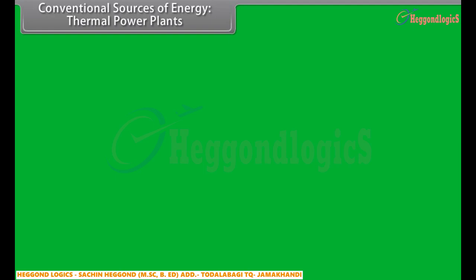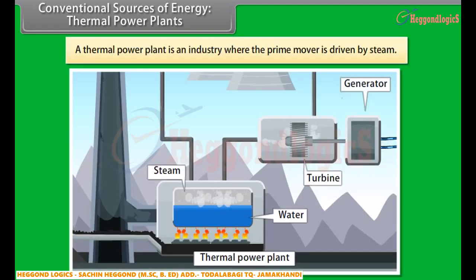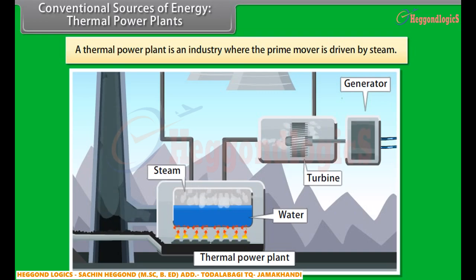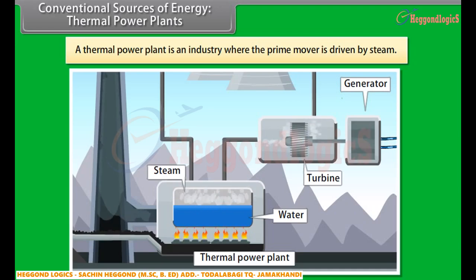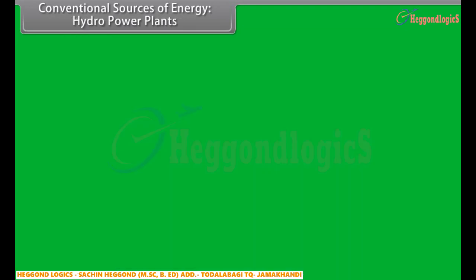Conventional sources of energy: Thermal power plants. A thermal power plant is an industry where energy is generated by steam. Here, water is heated and then turned into steam. This in turn spins a steam turbine, driving an electrical generator. After it passes through the turbine, the steam is condensed in a condenser and recycled to where it was heated.